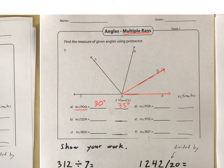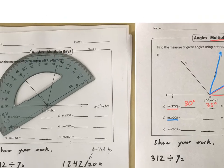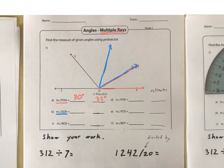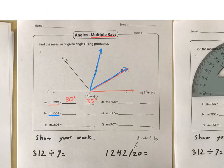Next, it's asking you to do QOR. QOR would be this one here. You will need to turn your protractor, like I've done here. First I forgot to do an estimate — if you look at this one, you'll see it's bigger than this one. This one's 30, so this one's a little bit bigger. Maybe I'll say that one's about 40 degrees.